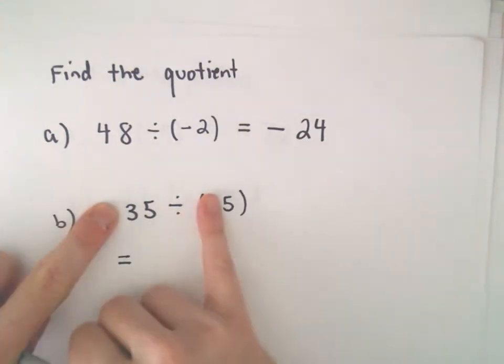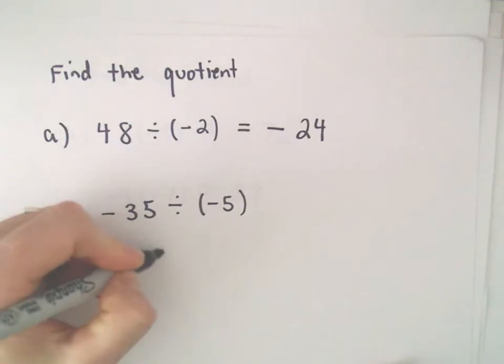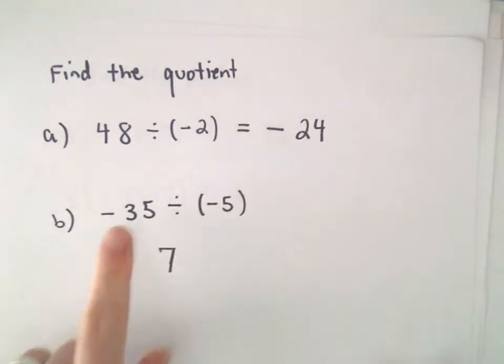Then I just forget again about the signs. I say, well, 35 divided by 5, that's going to give us 7. So, negative 35 divided by negative 5, well, that also gives us positive 7.